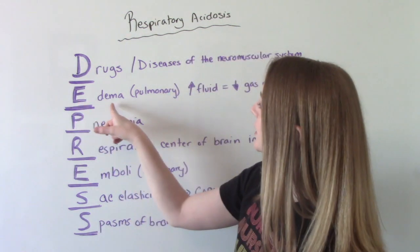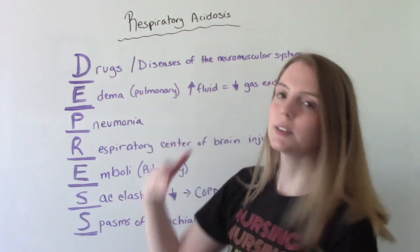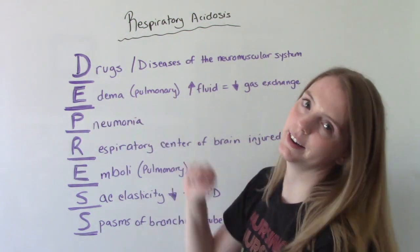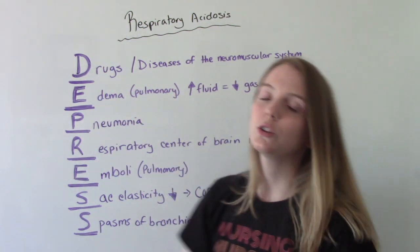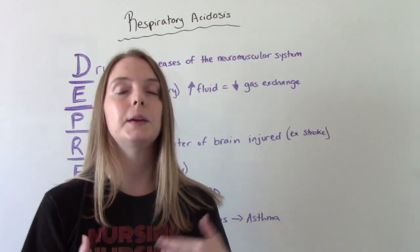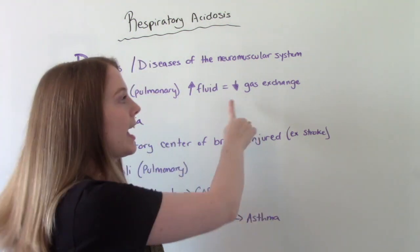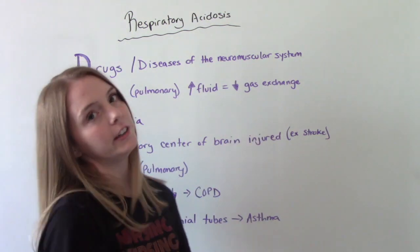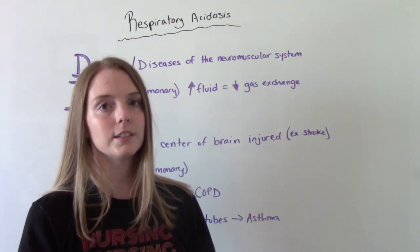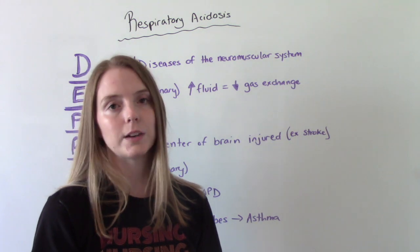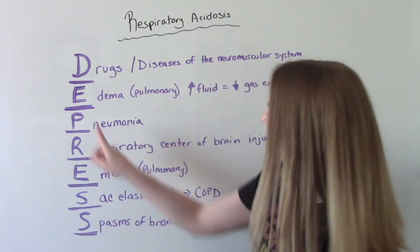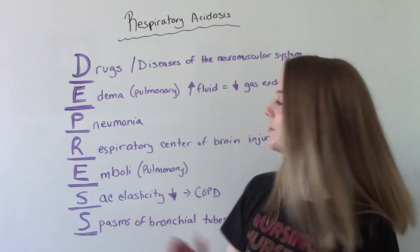E is for edema, specifically pulmonary edema. Too much fluid in the lungs impairs gas exchange, so that can cause decreased respirations. P is for pneumonia.